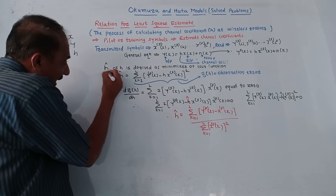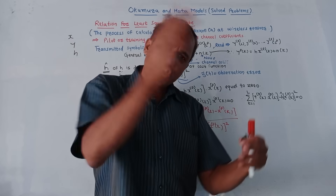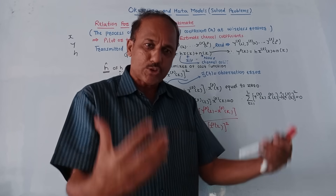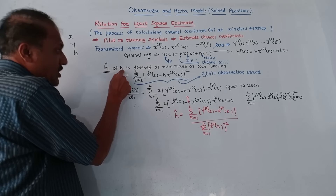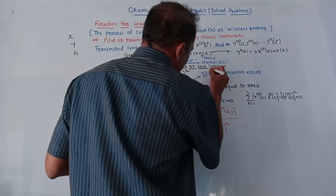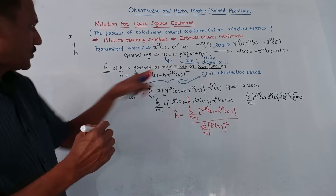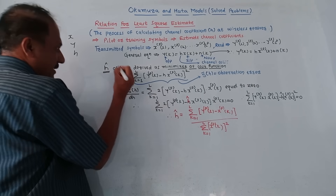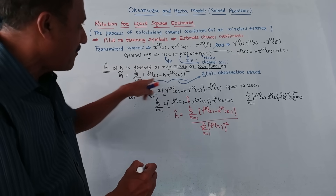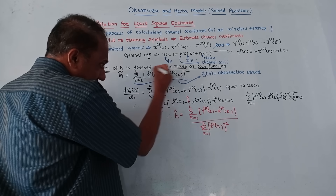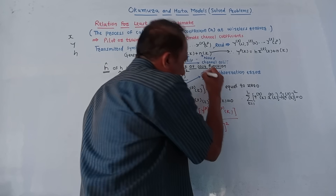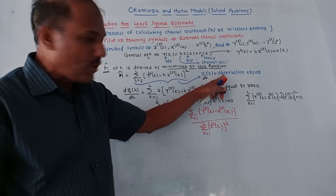Now h-cap(k) is the channel coefficient we have to estimate. Estimation in simple language is a judgment — we take a judgment about what the corresponding values of the channel coefficient could be. The estimation of h is denoted by h-cap. According to the least square rule, h-cap minimizes the cost function zeta(h), which is the summation from k=1 to L of [yp(k) − h·xp(k)]², also called the observation error.